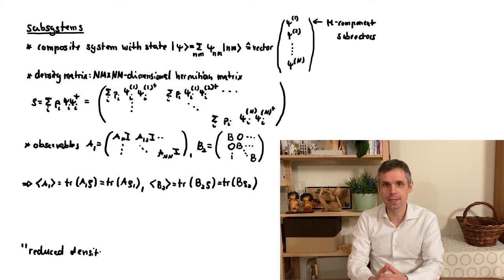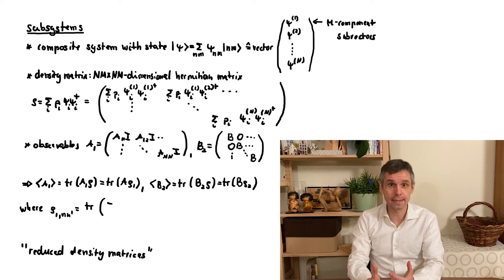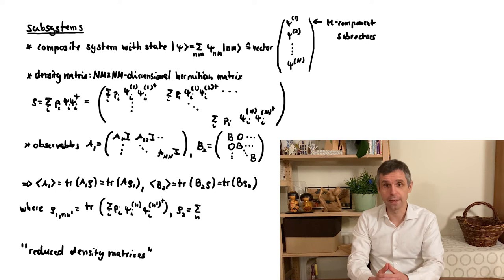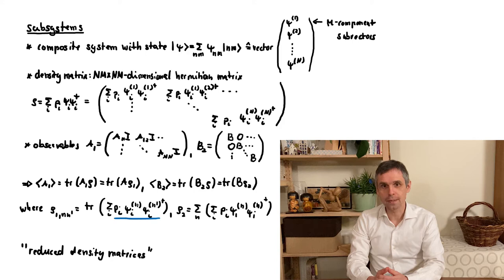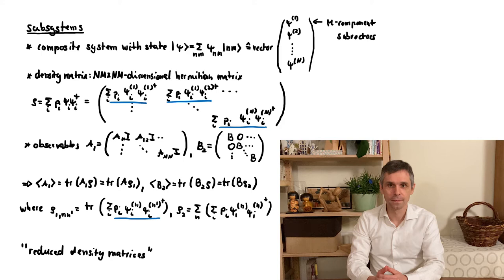These density matrices are called reduced density matrices and they capture all physically relevant information about a given part when we make observations on just this part. For completeness I give you the detailed forms of these density matrices here. What is important is that they are well defined while the details are not too critical. So the reduced density matrix ρ1 is obtained by taking the traces of the blocks of ρ. And the reduced density matrix ρ2 is obtained by summing the diagonal blocks of ρ. We call these operations partial traces and you can see that they give matrices of the correct dimensions.